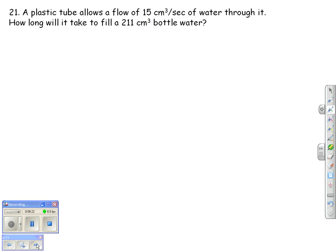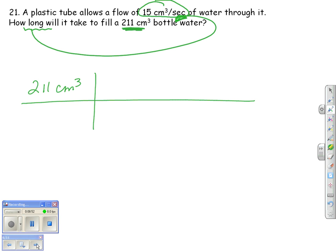A plastic tube allows a flow of 15 cubic centimeters per second. How long will it take to fill a 211 cubic centimeter bottle of water? Here's our rate. Here's what we want to start with. And we're looking for how long. So long is time. So we're looking for seconds. So if I have 211 centimeters cubed that I want to start with, my ratio is 15 centimeter cubed for every second. So I also know that in one second, it only fills 15 cubic centimeters. So I can cancel out my cubic centimeters. 211 divided by 15 is going to give me 14.07 seconds. That's my answer.